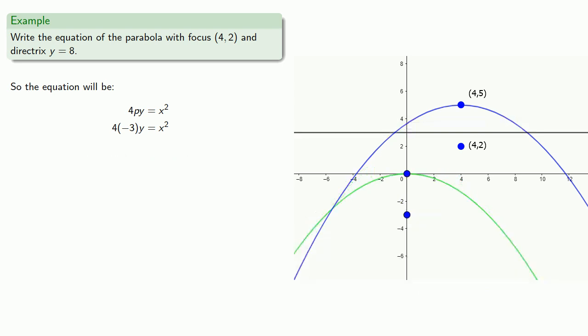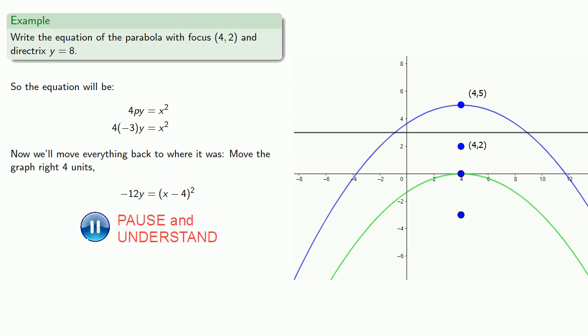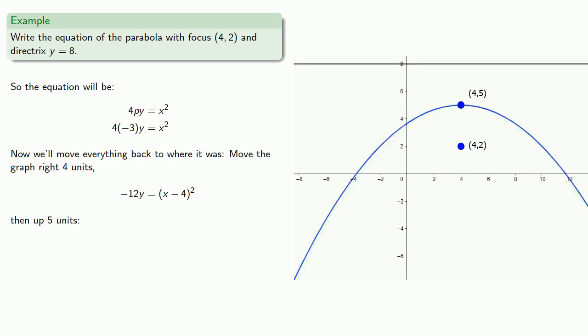Now let's put everything back to where it was. We'll need to move the graph right 4 units. And so our equation becomes... Then up 5 units, which gives us our final equation.